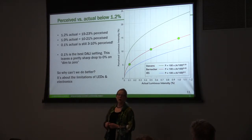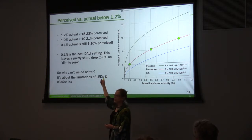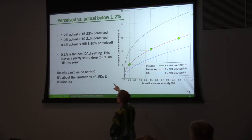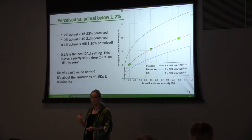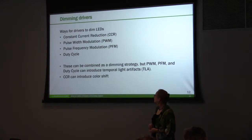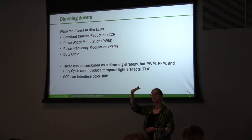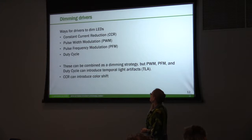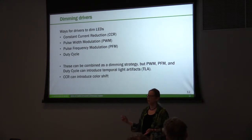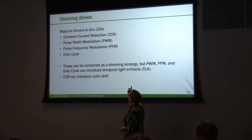Even if we're using DALI, it can take you down to 0.1% of your light output. But even 0.1% is still 3% to 10% of the perceived light output. So even what looks like a really impressive drop in dimming may not look like an impressive drop. There are three basic ways to dim LEDs: constant current reduction, pulse width modulation, and pulse frequency modulation. You can also change the duty cycle — turning it fully off for some period of the cycle. These can all be combined as a dimming strategy.